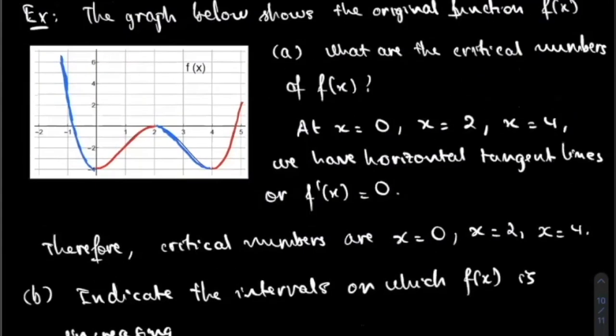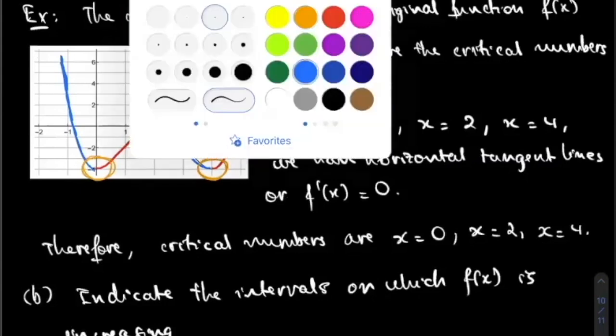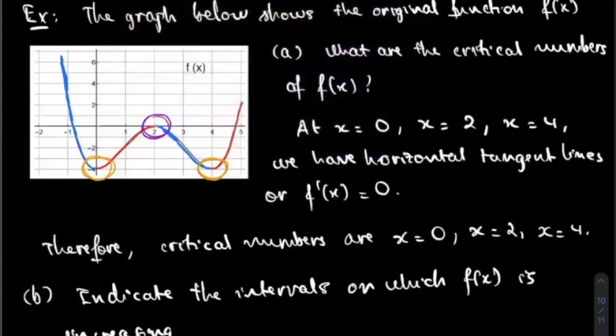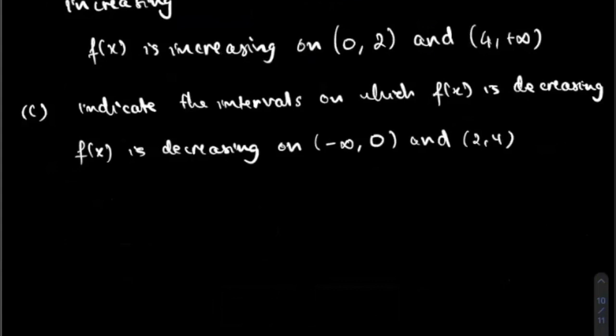For this graph, it's very easy to spot that at X equal to zero you have a local minimum, and you can actually identify the value of the local minimum. You also have another local minimum at X equal to four, and at X equal to two the function has a local maximum. That covers the first derivative test.